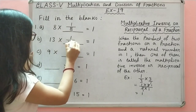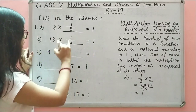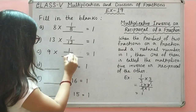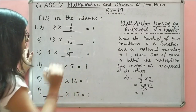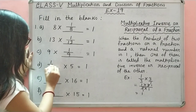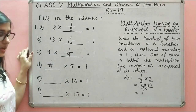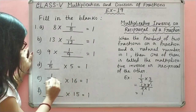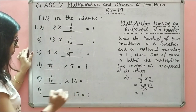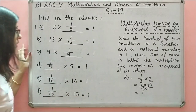Next, the multiplicative inverse of 13 — multiplying it with 13 gives 1. So 13 into 1 upon 13 is equal to 1. The multiplicative inverse of 9 is 1 upon 9; multiplying gives 1. The multiplicative inverse of 5 is 1 upon 5; 1 upon 5 into 5 gives 1. The multiplicative inverse of 16 is 1 upon 16; into 16 is equal to 1. The multiplicative inverse of 15 is 1 upon 15; into 15 is equal to 1.